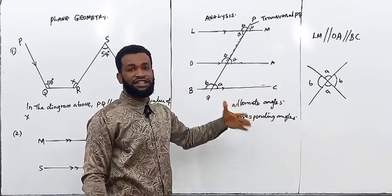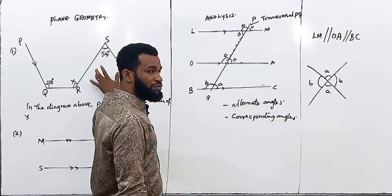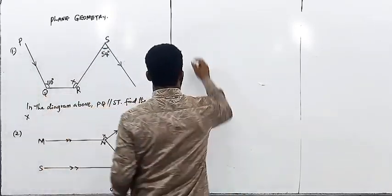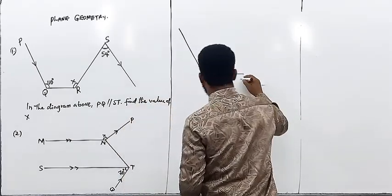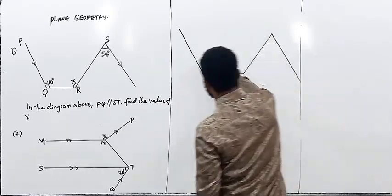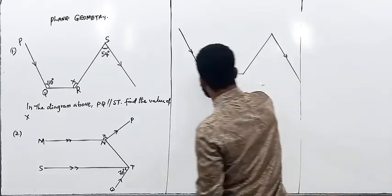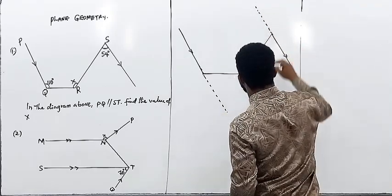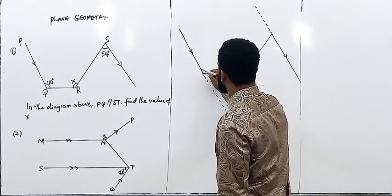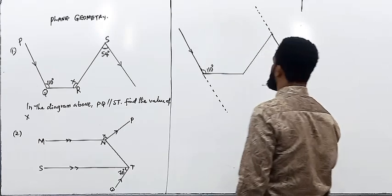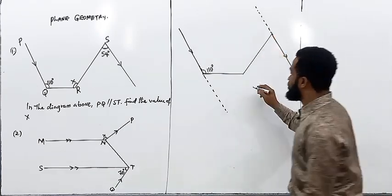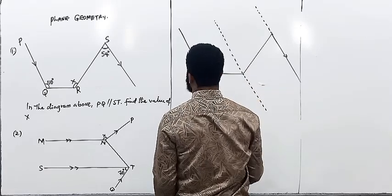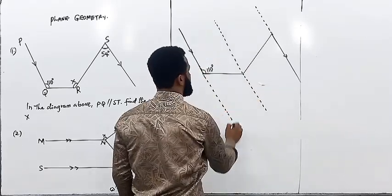Now, if you look at this diagram very well, you realize these lines are parallel. We have an angle here and an angle here. This line and this line are parallel, so if I produce this line and also produce this line, I know that if this place is 110, there is no transversal joining them directly. What I'm going to do at this point is make an auxiliary line that is also parallel, so that I'll be able to solve it.